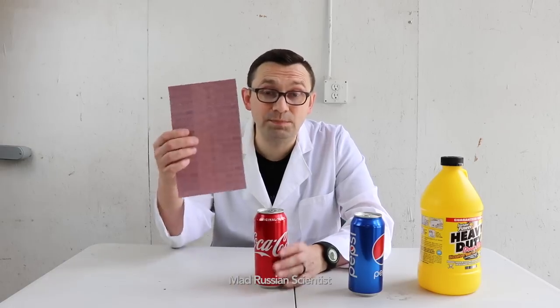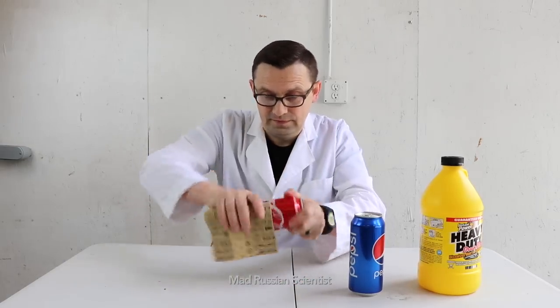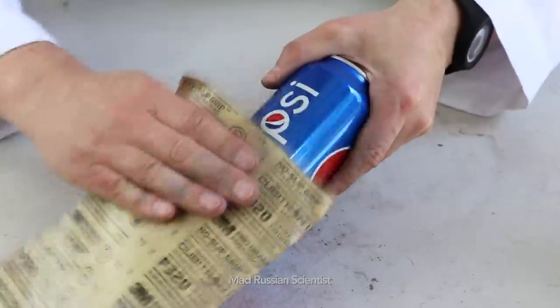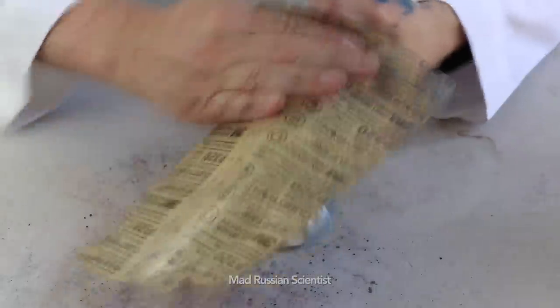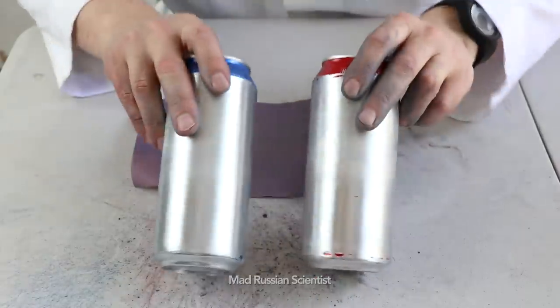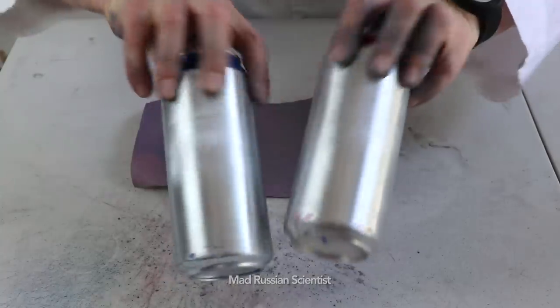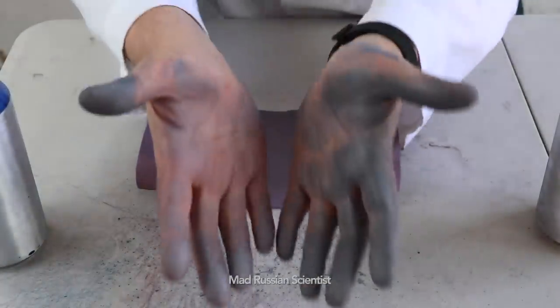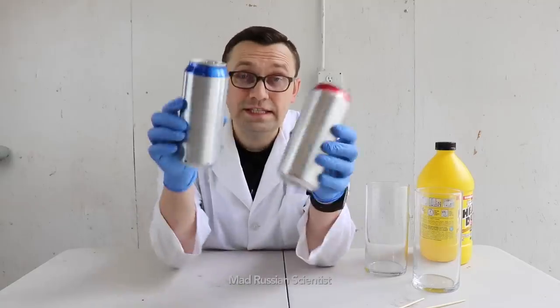First I'm going to use the sandpaper to get rid of the paint layer on this can. There you go, the first layer is taken out. Check this out. Look at my hands. That's crazy. So these cans are ready now.